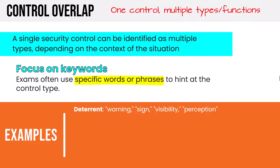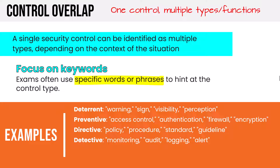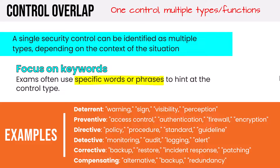When taking this to the exam, it comes down to the language — exams use specific words or phrases to hint at a control type. Keywords: warning, assign, visibility, perception indicate a deterrent control. Access control, authentication, firewall, encryption indicate preventive. Policy, procedure, standard, guideline indicate directive. Monitoring, auditing, logging, alerting indicate detective. Backup, restore, incident response, patching indicate corrective. Alternative, backup, redundancy, supporting are signs of a compensating control. Keep these keywords in mind and security control questions on the exam should be easy to navigate successfully.